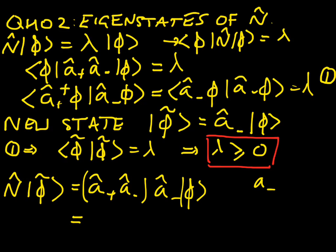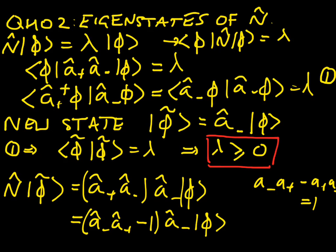So we know that a-minus, a-plus, minus a-plus, a-minus, is equal to one. So we can rearrange that, and we can say that, take the a-plus, a-minus to the right-hand side, and we'd say that a-minus, a-plus, minus one is a-plus, a-minus. So we'll substitute that in. We have a-minus, a-plus, minus one, and that's just using the commutator, acting on a-minus on ket phi. Okay, I'm going to go to a new page here.